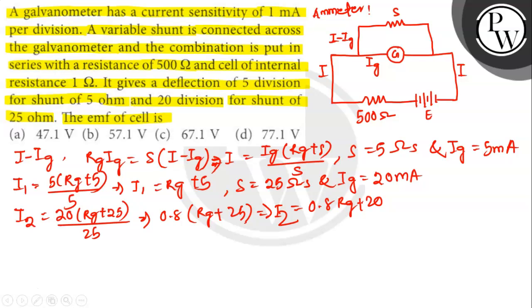Now the combination is connected in series with a resistance of 500 ohms and a cell of internal resistance 1 ohm. So R equals 500 ohm and small r equals 1 ohm.